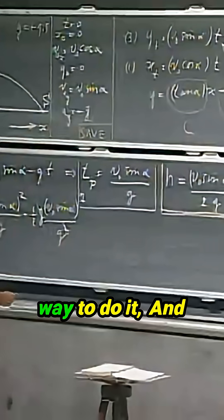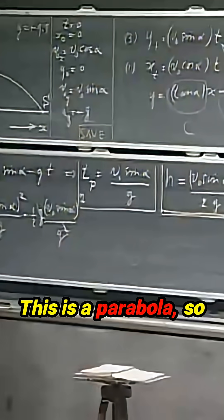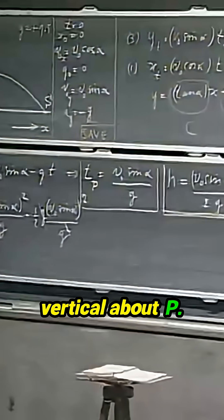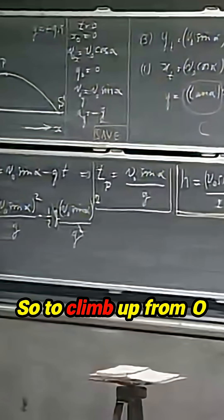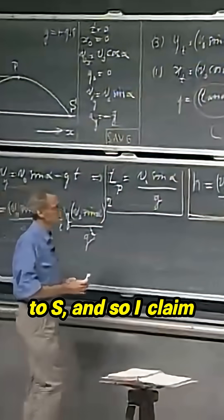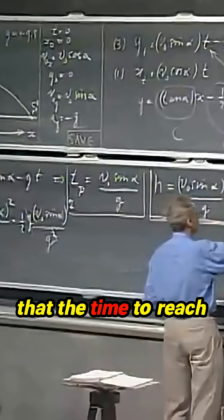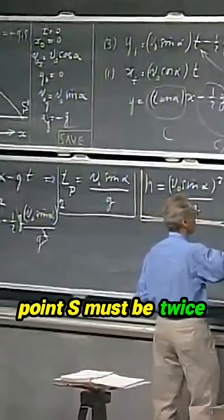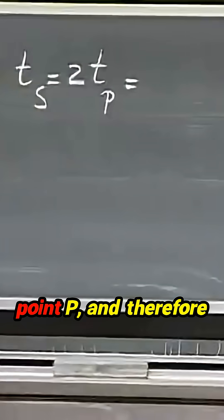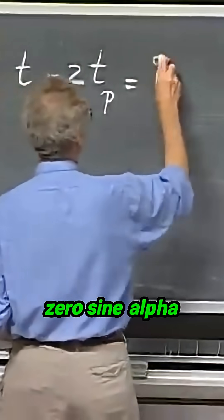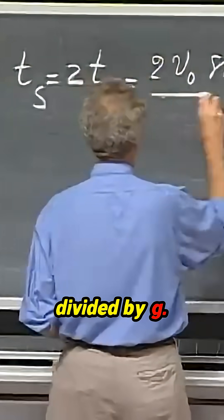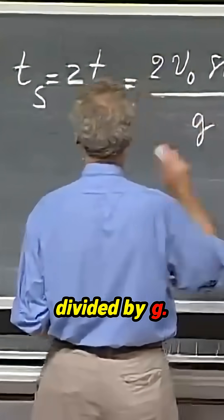I think there's a faster way to do it, and that's the following. This is a parabola, so it's completely symmetric about the vertical about P. So to climb up from O to P must take the same amount of time as to go down from P to S, and so I claim that the time to reach point S must be twice the time to reach point P, and therefore it's going to be two v zero sine alpha divided by g.